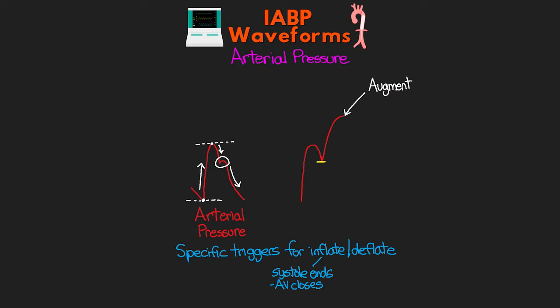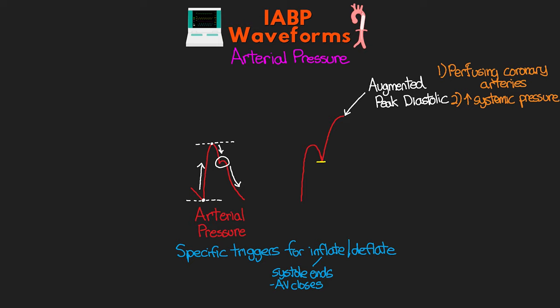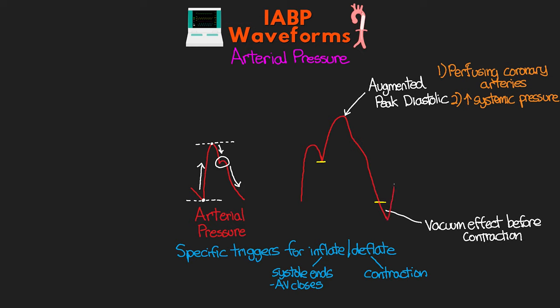The arterial pressure will rise until the balloon is fully inflated, and this is our augmented peak diastolic pressure — what you see shown as augmentation in white next to the balloon pressure waveform. Think of this as the increase in pressure that is, one, perfusing the coronary arteries, and two, increasing the systemic pressure. This augmented waveform appears as the highest point on the pressure tracing. From there, the same diastolic runoff occurs as arterial pressure drops. The next trigger is when the heart begins to contract — this is when the balloon deflates, creating a quick drop-off in pressure and a vacuum effect to reduce afterload just as the heart is beginning to contract again.